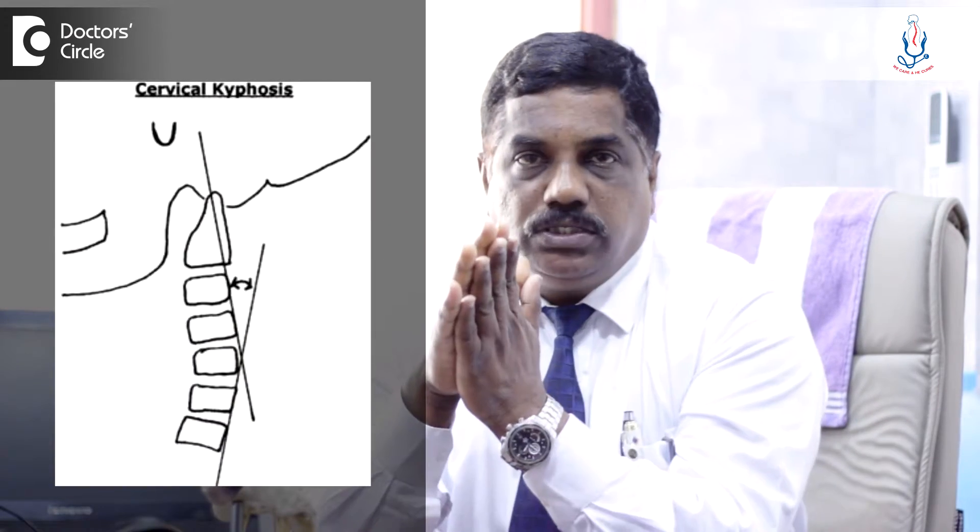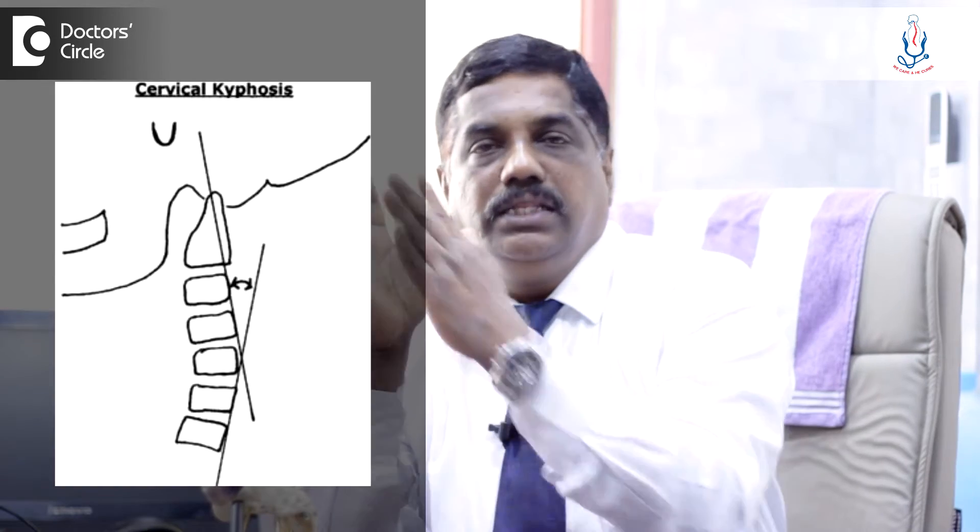That is why cervical kyphosis is much more dangerous than lumbar or thoracic kyphosis. In the thoracic spine, we have a normal physiological kyphotic curve. In the lumbar spine, we have a lordotic curve. But even in lumbar kyphosis, it doesn't give that much of a problem, because there we have nerve roots rather than spinal cord.